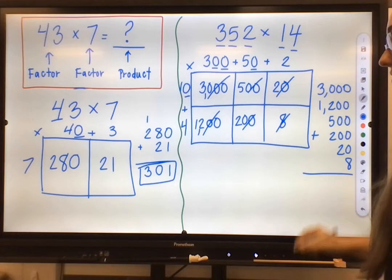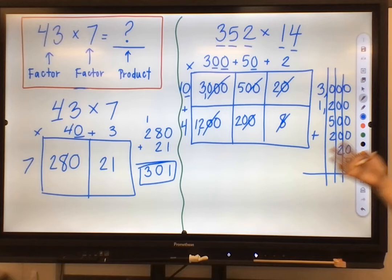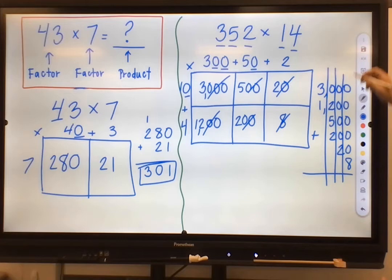This is where that strategy of thinking about these digits in the correct place value by drawing a line down there would really help you out with solving that. The more partial products you have, the more of a likelihood there is for you to mess up with the addition. So that helps me to see, okay, all these numbers are in the 1's, all these numbers are in the 10's, and so forth.